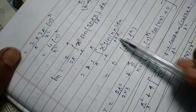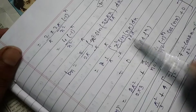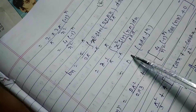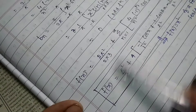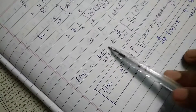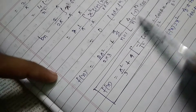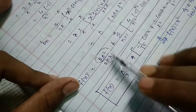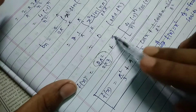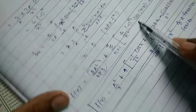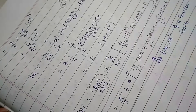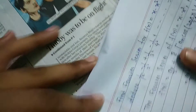Since bₙ = 0, we substitute the values: f(x) = π²/3 + summation from n=1 to infinity of [4(-1)ⁿ/n²]·cos(nx). This is the Fourier series of f(x) = x² on [-π, π].